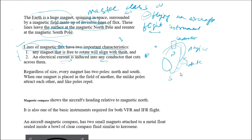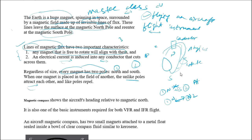Regardless of size, every magnet has two poles — a north pole and a south pole. When two magnets are placed close to each other, if the north pole of magnet one is near the south pole of magnet two, they will attract. If the north pole of magnet one is placed near the north pole of magnet two, they will repel. Unlike poles attract, and like poles repel.